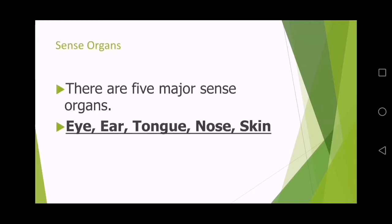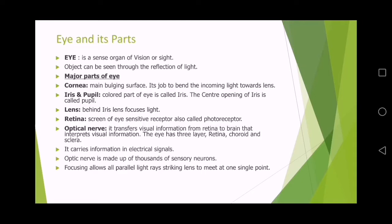Sense organs. There are five major sense organs: eye, ear, tongue, nose and skin. I am going to discuss these five senses one by one in a detailed manner. First of all I am going to cover the eye and its parts.